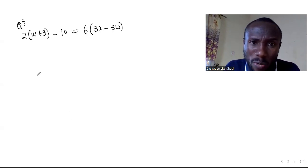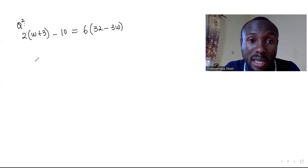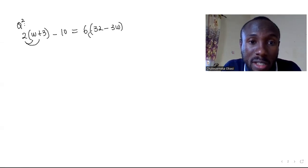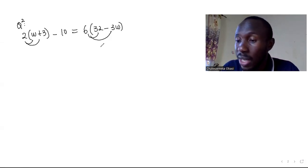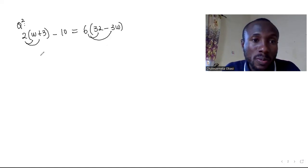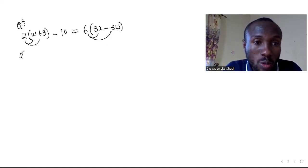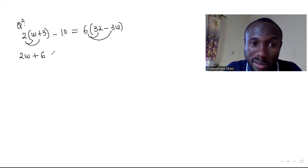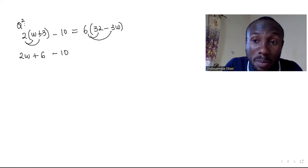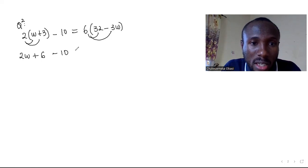For question 2, the first thing you want to do is remove the brackets. Use 2 to open the first bracket and 6 to open the second. So 2 times w gives 2w, and 2 times 3 gives 6, minus 10 — note that 2 cannot multiply 10 because 10 is not inside the parentheses. Then equal to 6 times 32.